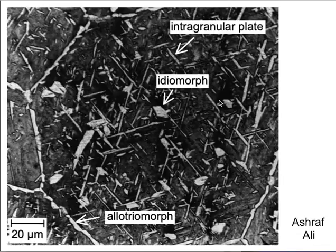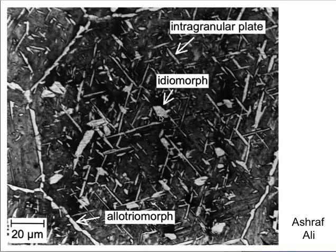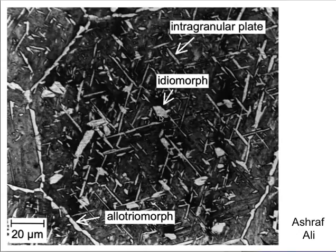This micrograph again shows the allotriomorphs of austenite, but in addition you can see intragranularly nucleated particles of ferrite which are the idiomorphs - and they clearly are faceted. Notice that the austenite grain size here is huge, because remember we are looking at two-dimensional sections, so a particle we claim is intragranularly nucleated could arise from a grain boundary under the image. But if you have a large austenite grain size you can be pretty sure that the particle in the middle is actually intragranularly nucleated.